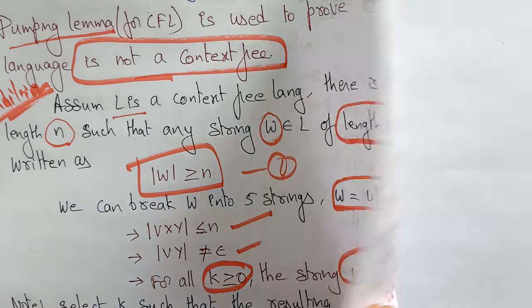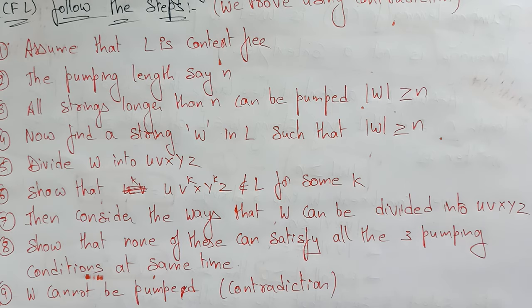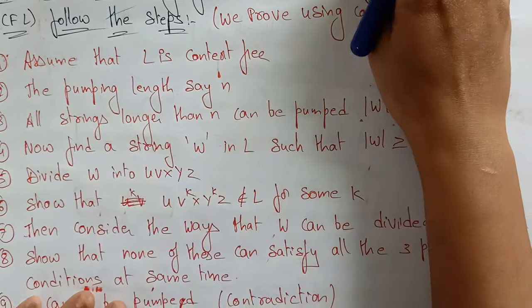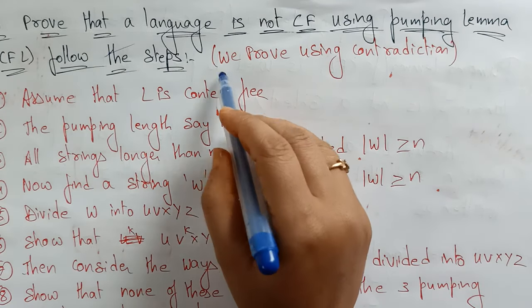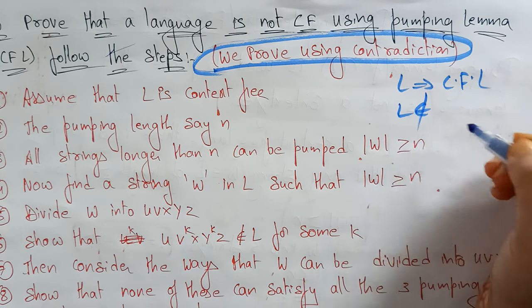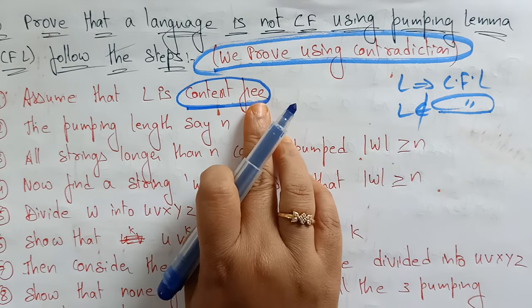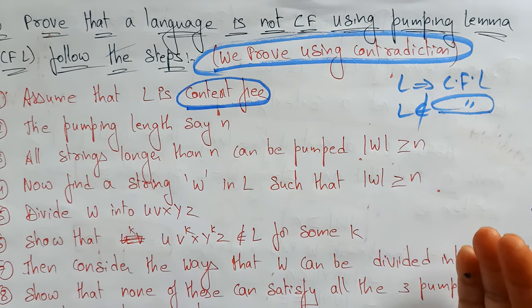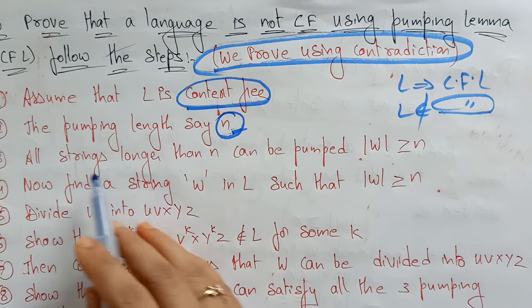Once you understand these steps, the next video will work through an example. To prove a language is not context-free using the pumping lemma, follow these steps: first, assume the language is context-free — start with the contradiction. We assume the given language is context-free and then prove that it is not.